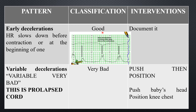Early deceleration is considered good. It denotes head compression. When the baby's head is in vertex or cephalic presentation and the uterus contracts, pressure on the fetal skull slows cerebral blood flow, causing the heart rate to slow down. So before the contraction we see early deceleration — this is documented.